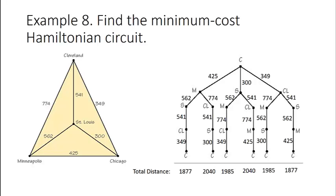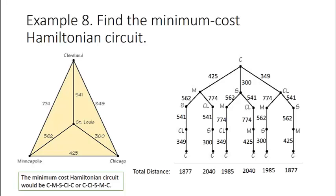Now we just simply pick the smallest. We see that the minimum cost Hamiltonian circuit in this graph would be to travel from Chicago to Minneapolis to St. Louis to Cleveland back to Chicago. That would be a total distance of 1,877 miles.